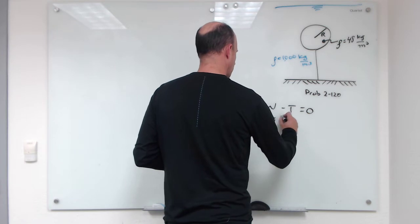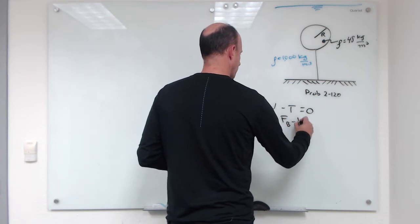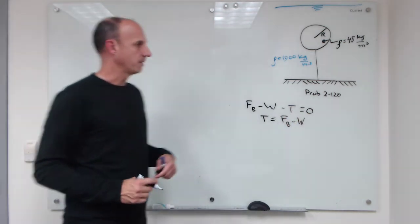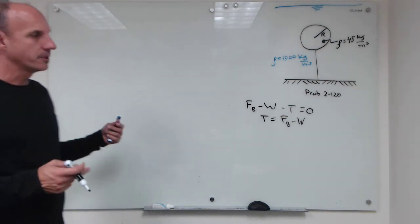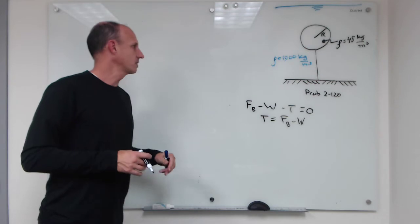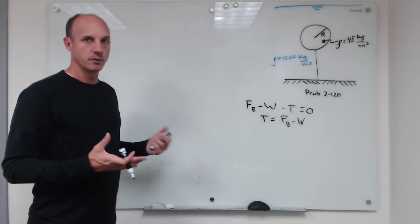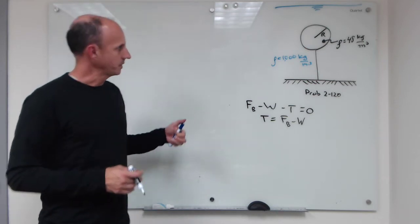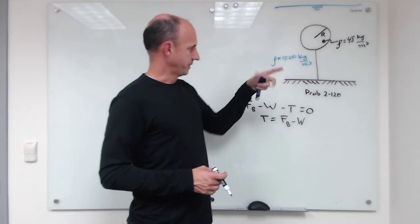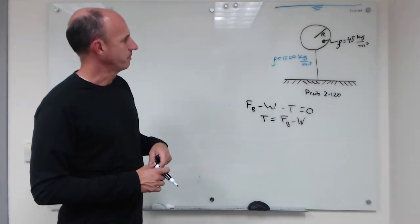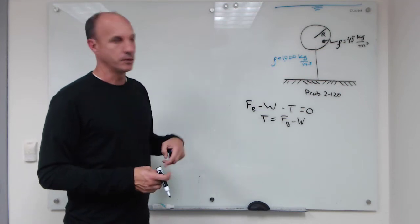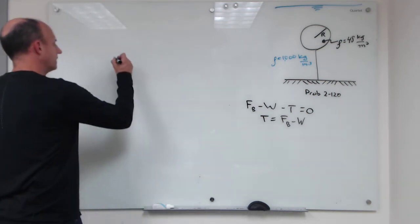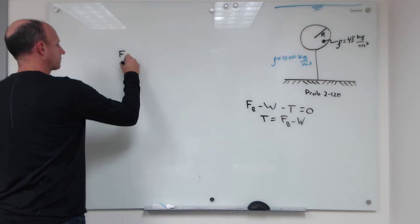If our goal is to find the tension, that's just going to be equal to the buoyant force minus the weight of the ball. So how do we determine the buoyant force? Well, according to Archimedes' principle, the buoyant force is equal to the weight of the displaced fluid. And so since this sphere has a volume, the weight of the displaced fluid will just be the volume times the unit weight of water.